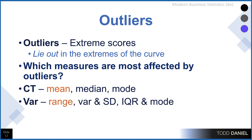What causes skewness? One cause can be outliers — extreme scores that lie out in the extremes of the curve. Which measures are most affected by outliers? For central tendency, the mean is affected the most, the median a little bit, but the mode not at all. For measures of variability, the range is severely susceptible to outliers; the variance and standard deviation will also be affected, but the interquartile range and the mode would not be affected by outliers at all.